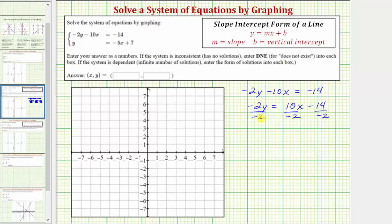Simplifying, negative 2 divided by negative 2 is positive 1. 1 times y is y, so we have y equals. 10 divided by negative 2 is negative 5, so we have negative 5x. And negative 14 divided by negative 2 is positive 7, so we have plus 7.